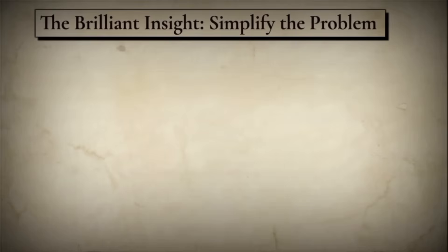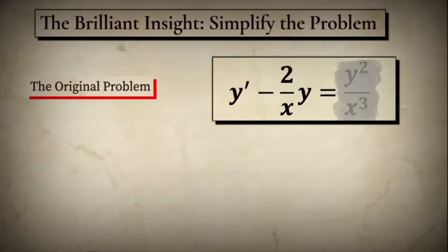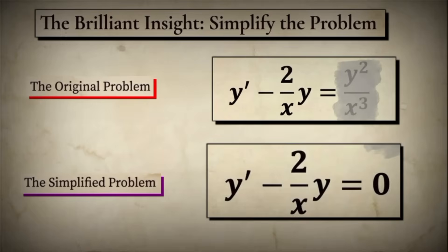Here is the brilliant insight that changed everything. What if we broke the problem into two parts? What if, for a moment, we completely ignored the difficult part? We're going to temporarily set the right side of the equation to zero. We'll create what mathematicians call a homogeneous equation — a simplified version of the original. Original equation: y' minus 2/x·y equals y²/x³. Simplified homogeneous equation: y' minus 2/x·y equals zero. Because this simplified version we can solve using separation of variables, and crucially — this is the key to understanding Bernoulli's genius — solving it will give us the underlying form of the true solution.